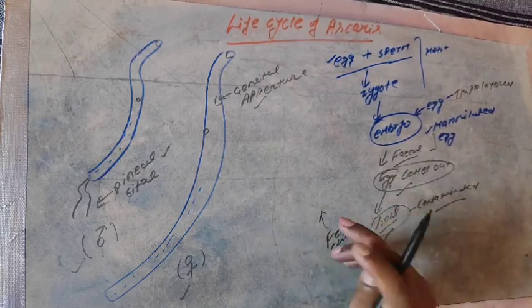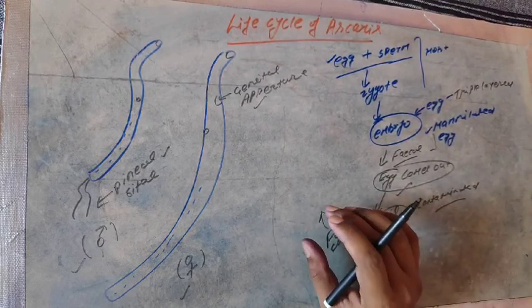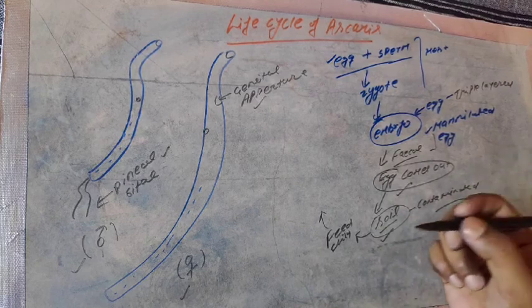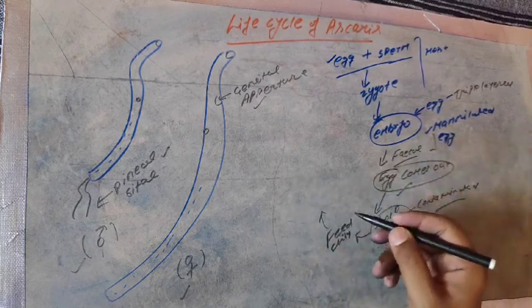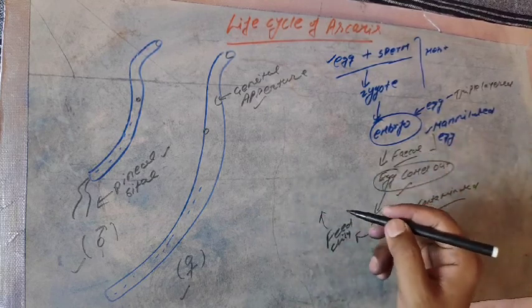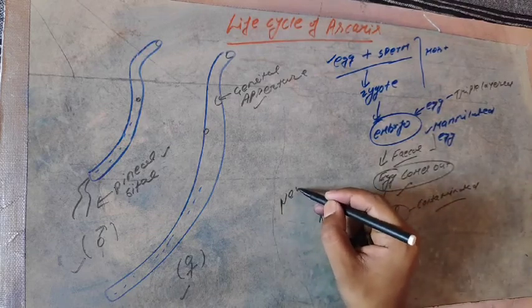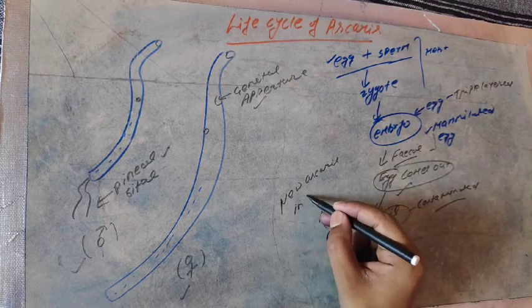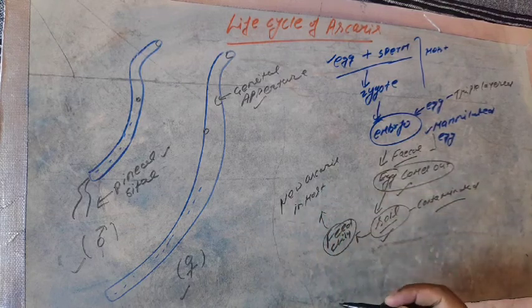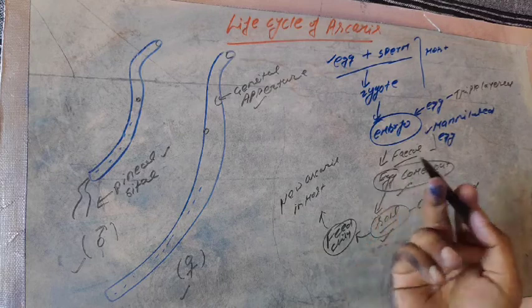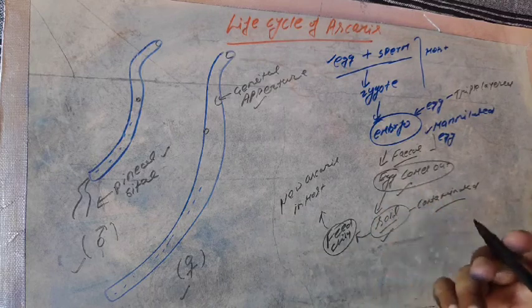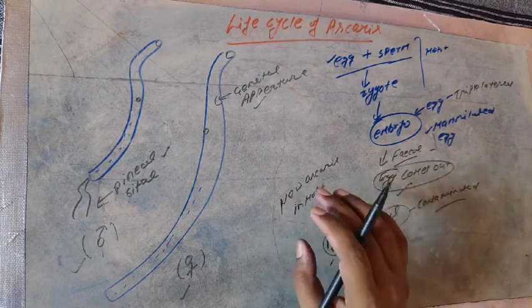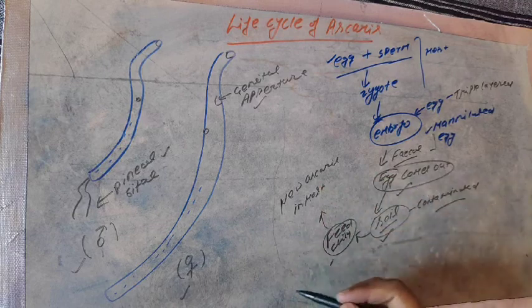If soil containing mammelated egg is reached into intestine, then in intestine the tri-layered or triple-layered egg gets digested, releasing the embryo, and new Ascaris develops in host. Anyone, whether the new young one or the old age or anyone that feeds on the contaminated soil will actually get infected by Ascaris.